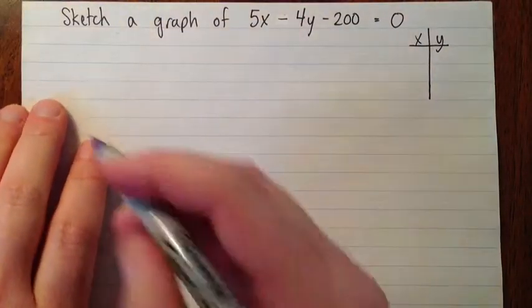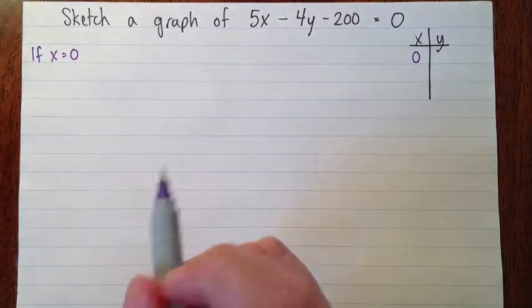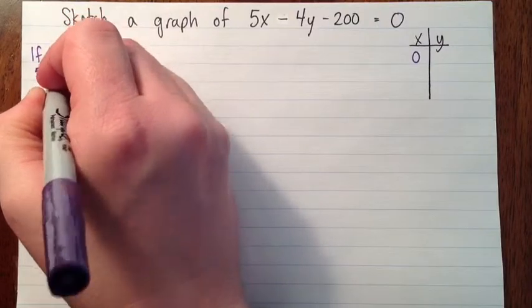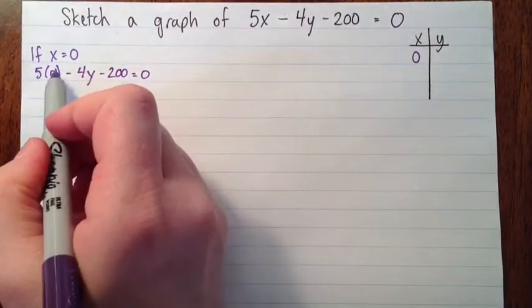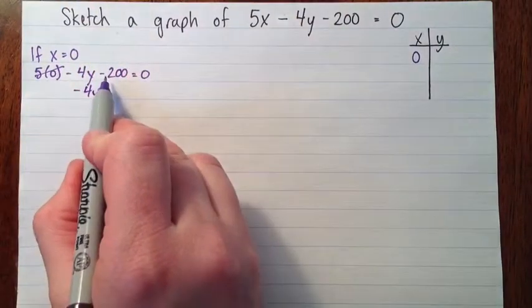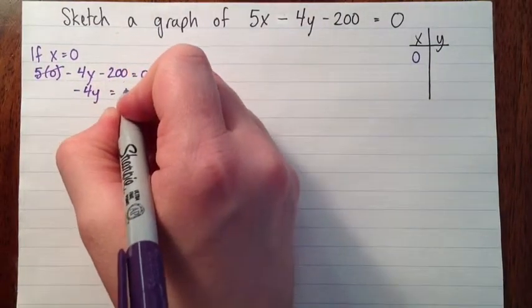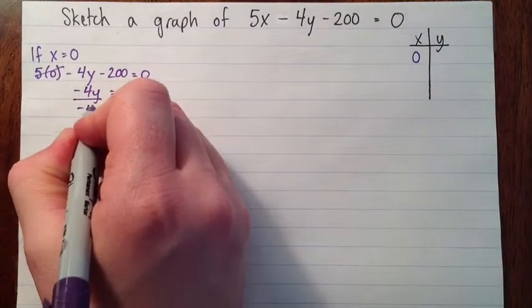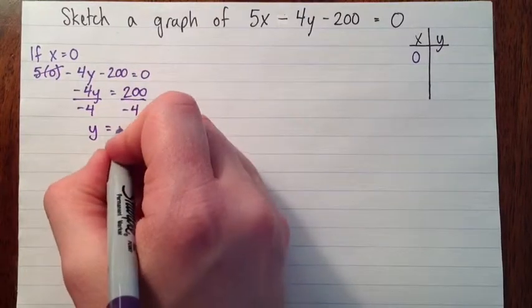So the first point I'm going to find is, well, what about if x equals 0? And then I'm going to substitute x equals 0 into the equation and solve for y. So we have 5 times 0 minus 4y minus 200 equals 0. So 5 times 0 is 0. We have negative 4y, and then I'm going to add 200 to both sides. I'm going to just do it all at once. So I have negative 4y equals 200. And then to isolate y, I'm going to divide by negative 4. So we get y equals negative 50.